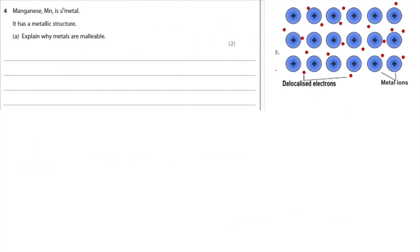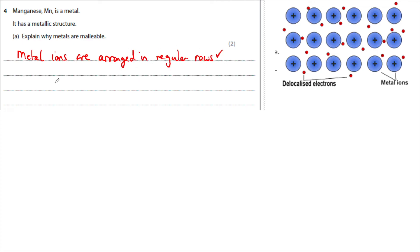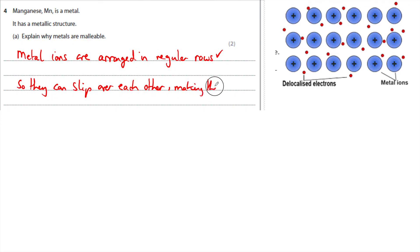Manganese (Mn) is a metal with a metallic structure — explain why metals are malleable. The metal ions are arranged in regular rows, and it is those rows that can slip over each other, making it malleable — meaning you can bend it. It's only worth two marks so it just needs two statements: metal ions are arranged in regular rows so they can slip over each other, making the metal bendable.